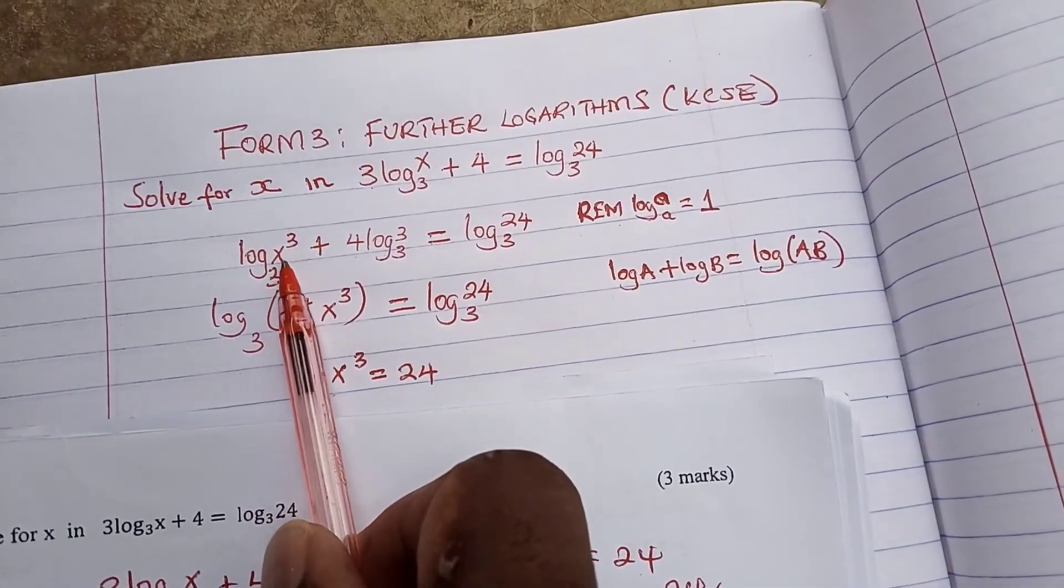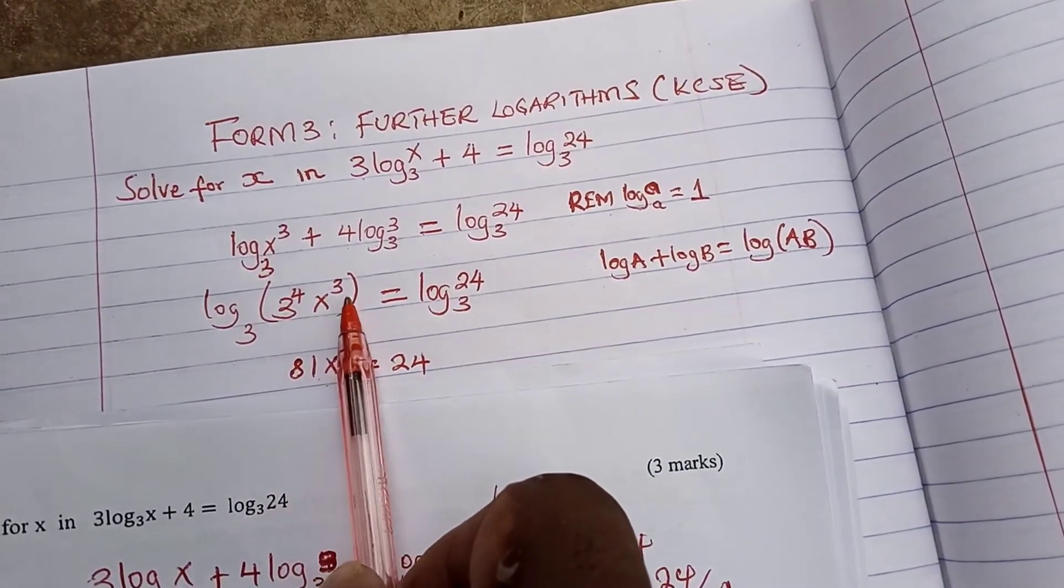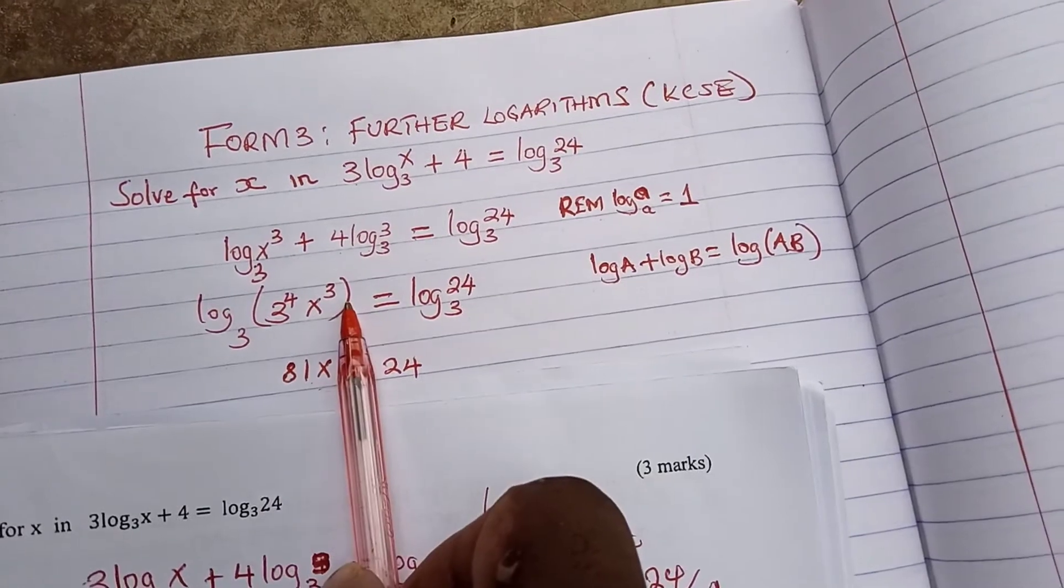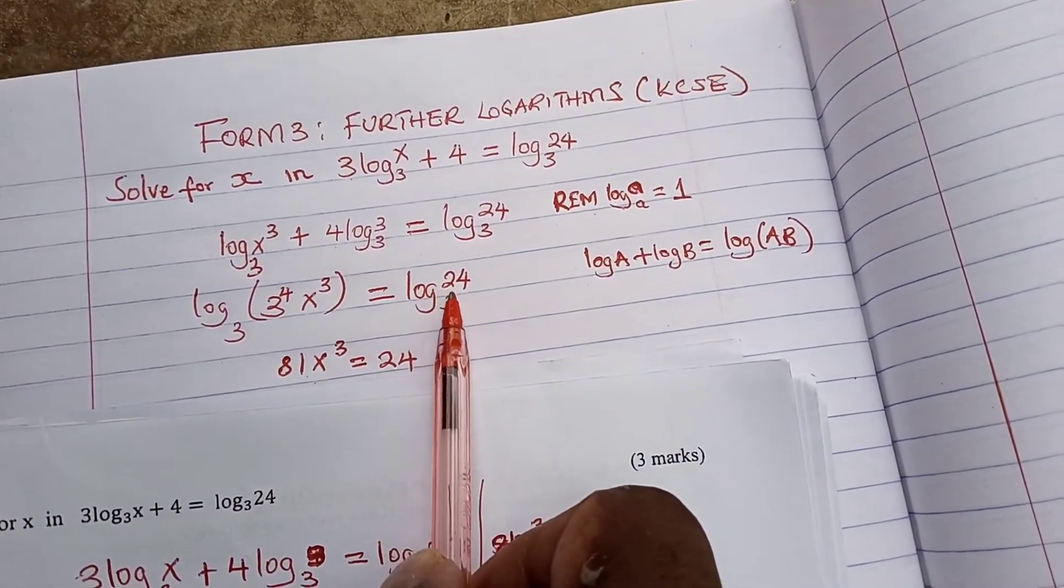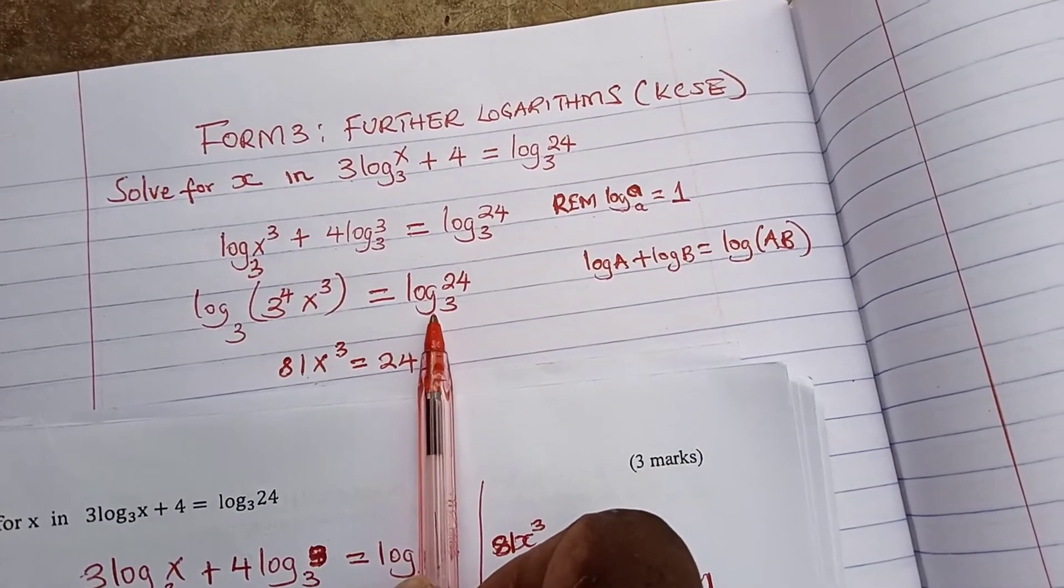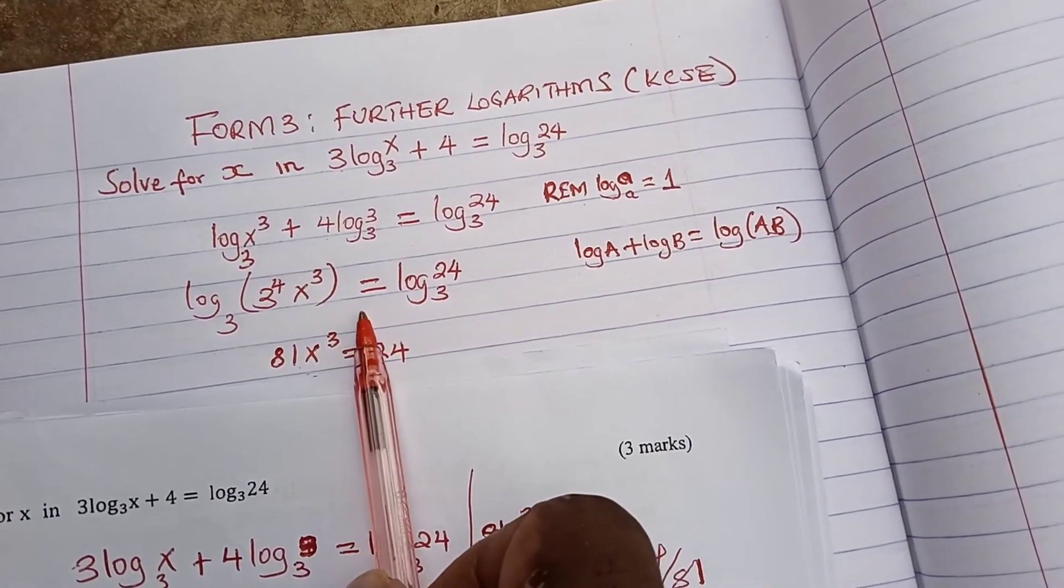Log 3 times 3, so we are going to have log to base 3. We are going to have log to base 3, 3 to power 4 times x to power 3, which is equal to log 24 to base 3.